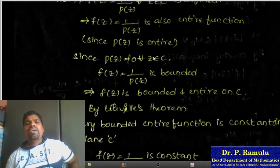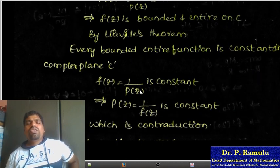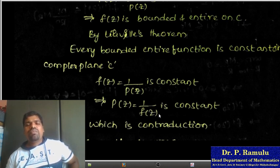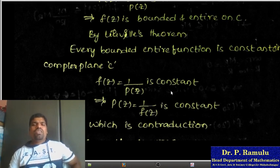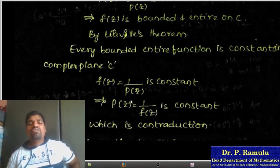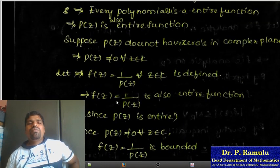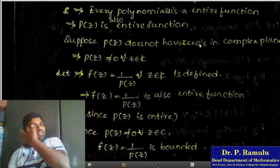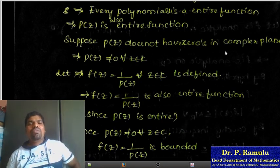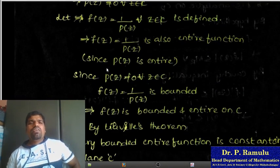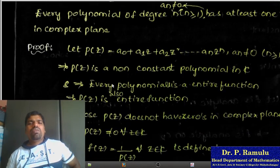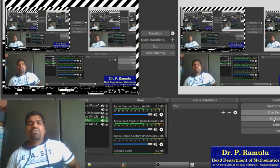By Liouville's theorem, every bounded entire function is constant in the complex plane. Therefore f(z) = 1/p(z) is constant, which implies p(z) is constant. But this is a contradiction because p(z) is a non-constant polynomial. Therefore the assumption that p(z) has no zeros is false. Hence there exists at least one z₀ in C such that p(z₀) = 0. This proves the fundamental theorem of algebra. This ends lecture 5. Thank you for watching.